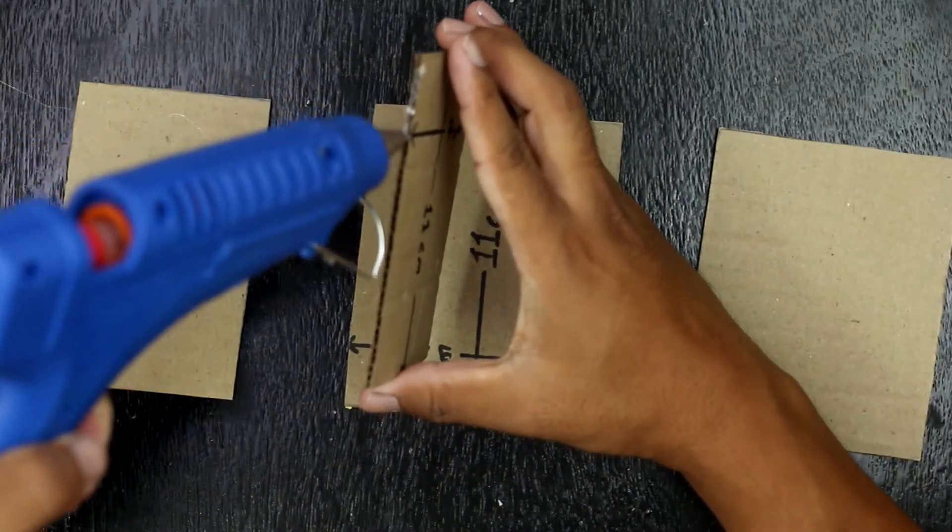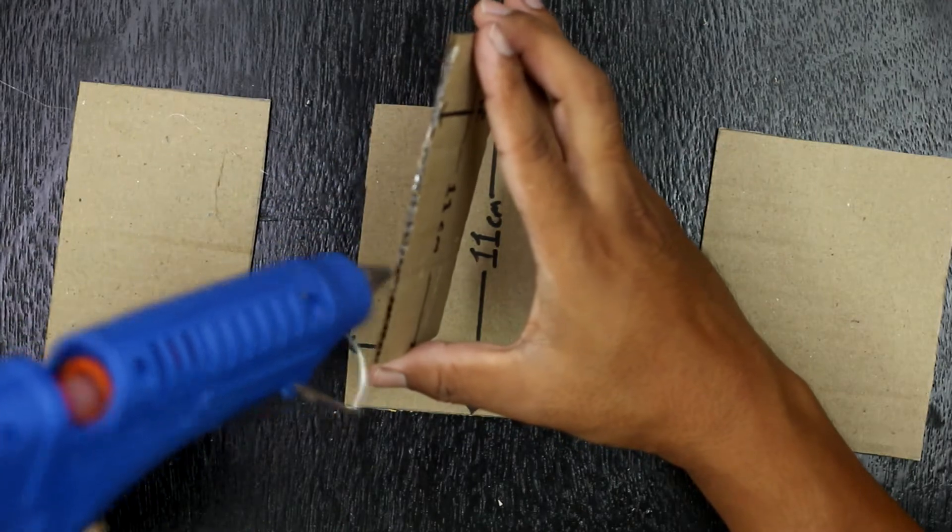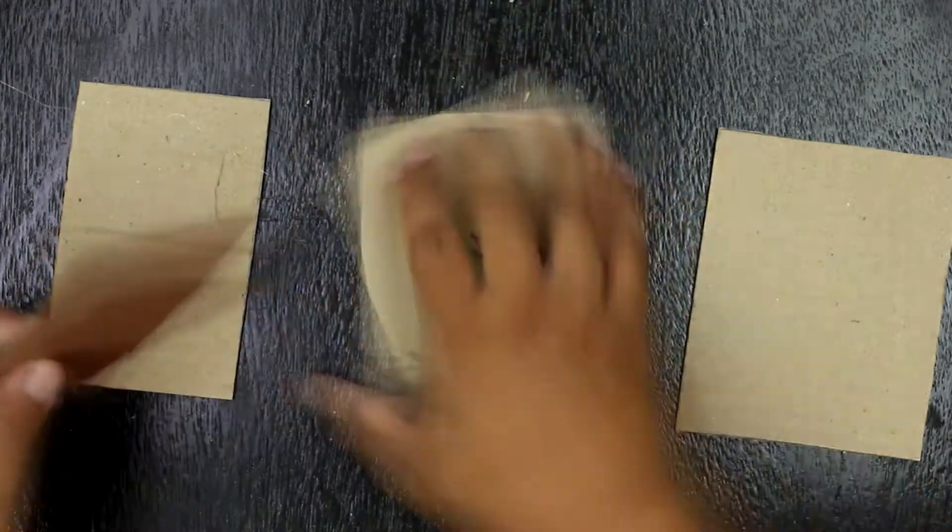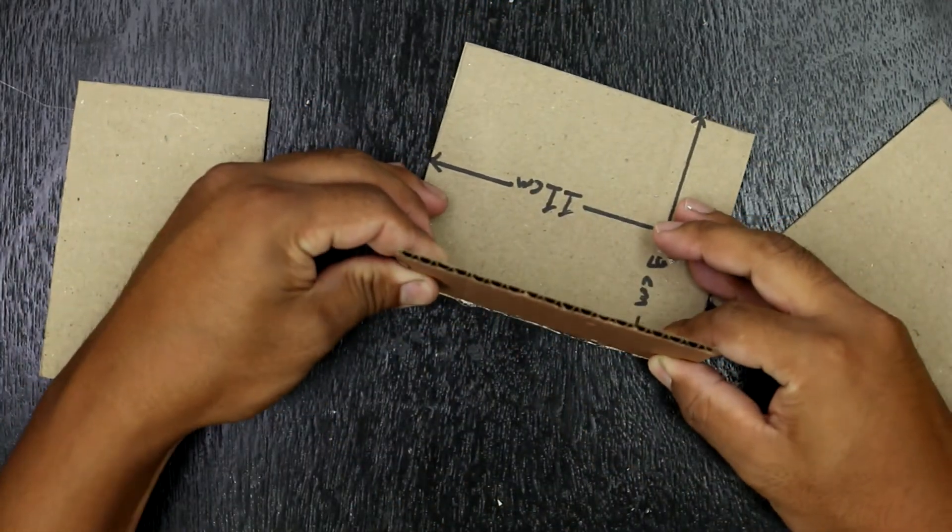First of all, I glued the front and side cardboard and made a rectangular box. Then I wrapped it with colored paper.